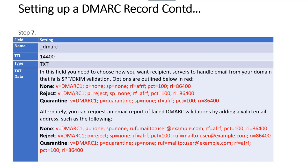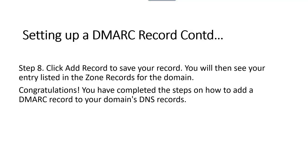Alternatively, you can request an email report of failed DMARC validations by adding valid email addresses — options include reject and quarantine settings. Step eight: click Add Record to save your record. You'll then see your entry listed in the zone records in your zone editor. Congratulations, you've completed the steps on how to add a DMARC record to your domain's DNS records.